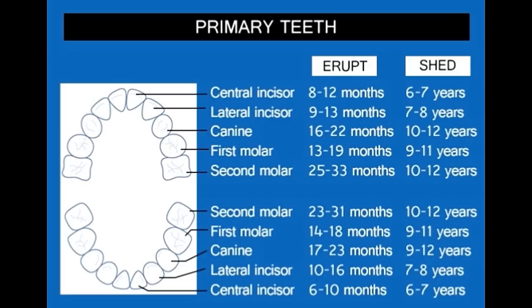Both the maxillary and mandibular dental arches contain similar types of teeth. Permanent dentition, which refers to the types and arrangement of the permanent teeth, includes 32 teeth with 16 teeth in both dental arches. Normally, an adult has 32 teeth, grouped into the following types: 2 central incisors, 2 lateral incisors, 2 canines, 2 first premolars, 2 second premolars, 2 first molars, 2 second molars, and 2 third molars.